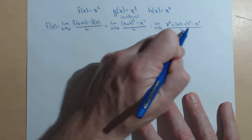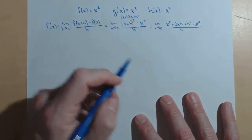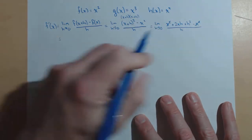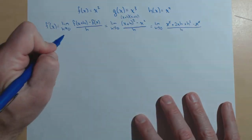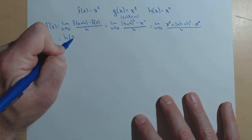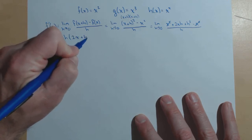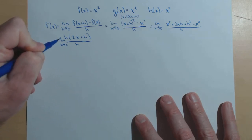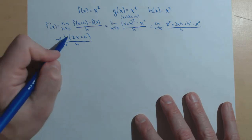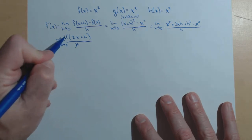Now, notice what will happen here. The x squareds are going to cancel. And now, in the numerator, I can factor out an h, as both terms have an h in them: h times 2x plus h, all over h. I need to keep writing limit as h goes to zero, as we haven't taken it yet.